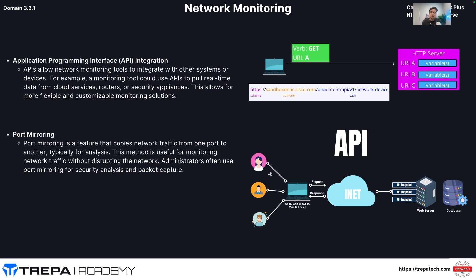Some other network monitoring — we may want API integration. APIs allow network monitoring tools to integrate with other systems. For example, using an IPAM system like NetBox as our source of truth for IP address management, and having a dynamic library for Ansible playbooks that can be constantly updated by what's in our IPAM when we run playbooks against our network devices. We can use API integration across network services, systems, and applications to build a good infrastructure-as-code environment for troubleshooting, monitoring, and managing.